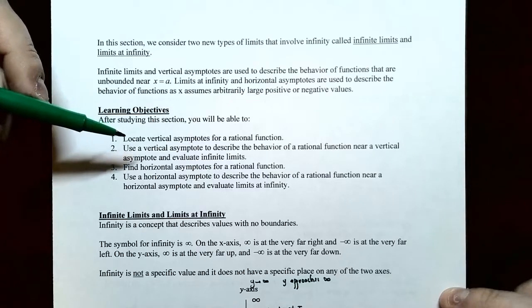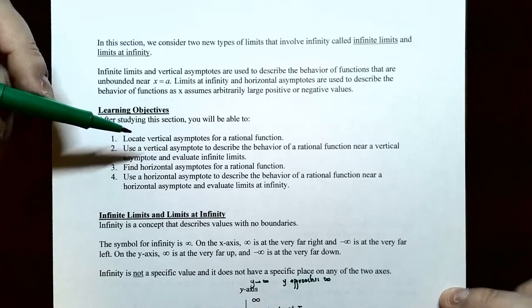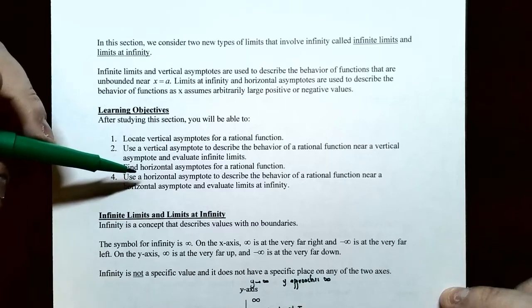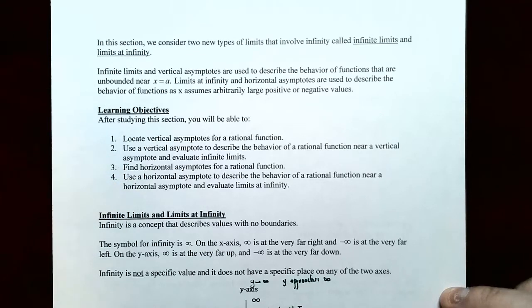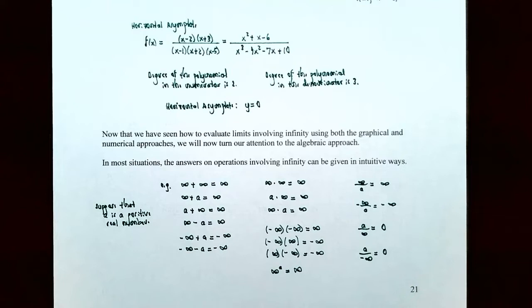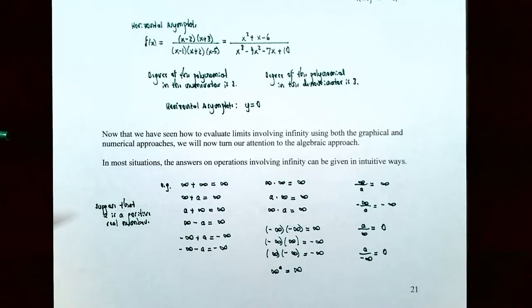Hi everyone, it's Professor Pemberton. In this video we're going to finish up our discussion on limits involving infinity. We found out that vertical asymptotes are related to infinite limits where the y values approach infinity or negative infinity. We also talked about horizontal asymptotes and how they relate to limits at infinity where x approaches infinity or negative infinity. Now we're going to talk about how to find horizontal asymptotes using an algebraic approach.